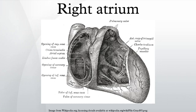The right atrium is one of four chambers in the hearts of mammals and archosaurs. It receives deoxygenated blood from the superior and inferior vena cava, the coronary sinus, and the anterior and smallest cardiac veins, and pumps it into the right ventricle through the tricuspid valve.